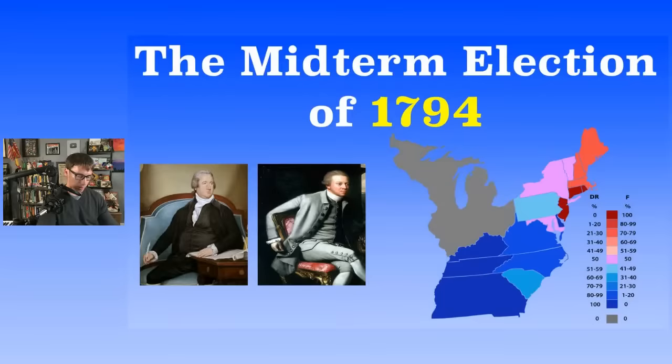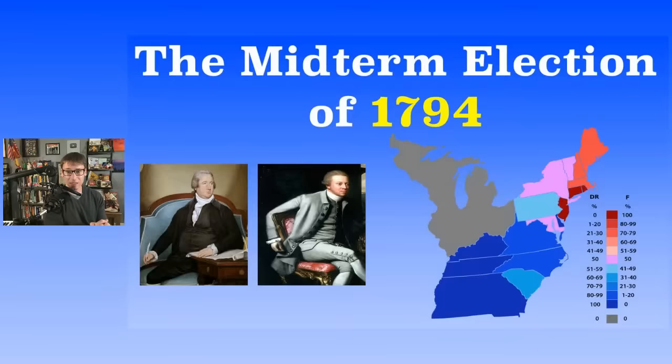Already we've got conflicted loyalties — it's starting to get a little dicier. In the Senate before the election, the majority was Federalists slash pro-administration. After, it remained Federalist. There were 16 seats needed for a majority, 30 seats total. After this election in the Senate, you had 19 seats for the Federalists and 10 for the Democratic-Republicans.